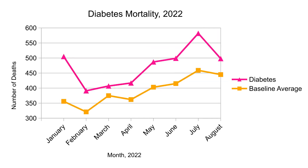Deaths due to diabetes have seen significant increases throughout the course of this year. According to Diabetes Australia, diabetes is the fastest-growing chronic condition in Australia. Risk factors include age, obesity, and a lack of physical exercise — things that could well have worsened throughout the pandemic.